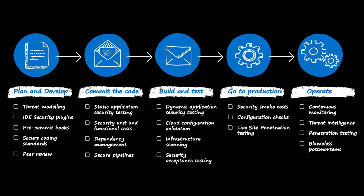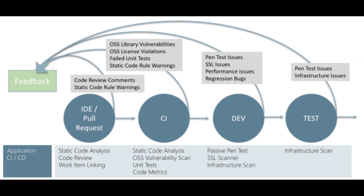DevSecOps stands for Development, Security, and Operations. The security side of things is just a layer on top of your entire DevOps process. It starts from the very beginning where you are writing your code — you test it there and make sure your code doesn't have any vulnerabilities, for example no hard-coded passwords. All these things are taken care of before you actually deploy the application. That's where the shift-left approach comes into play.